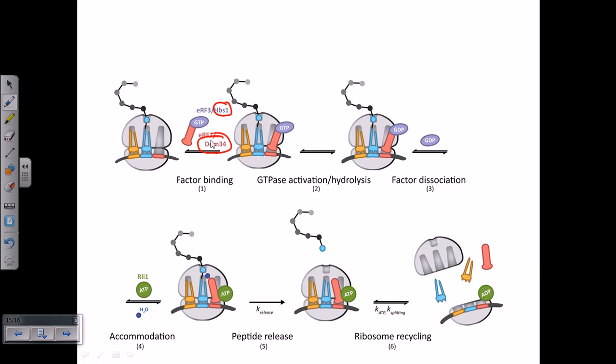So for the bringing of release factor 1, we need this release factor 3, we need this GTP in the place. So once they bring it, they require the energy. GTP is hydrolyzed, GDP is released. So now they need further energy and also the presence of a water molecule to hydrolyze the peptide bond.